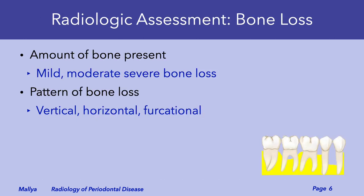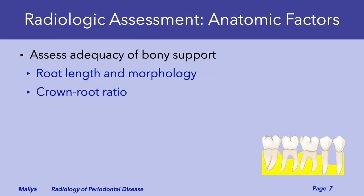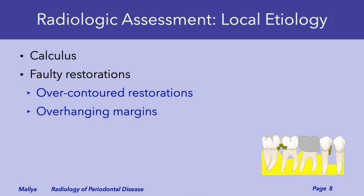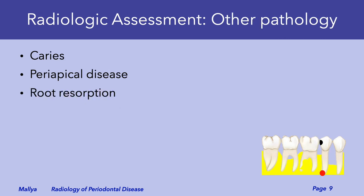On radiographs you can determine the pattern of bone loss and its severity, assess the adequacy of the bony support for function, and identify local etiological factors including calculus and faulty restorations. Additionally, you will also identify other pathology of significance including caries, periapical disease, and root resorption.